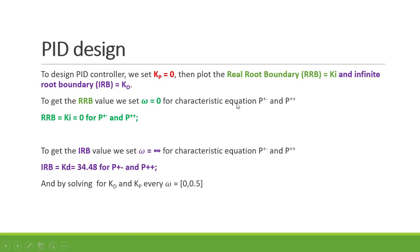We will set the KB value to zero and find the RRB line and IRB line. RRB belongs to the Real Root Boundary at omega equal to zero, and IRB is the Infinite Root Boundary at omega equal to infinity. To get the RRB value we set omega equal to zero.